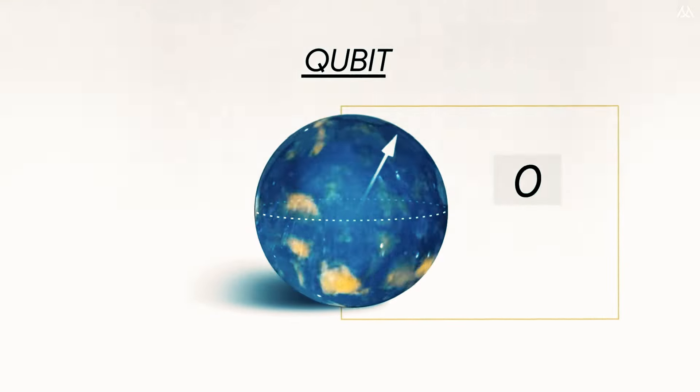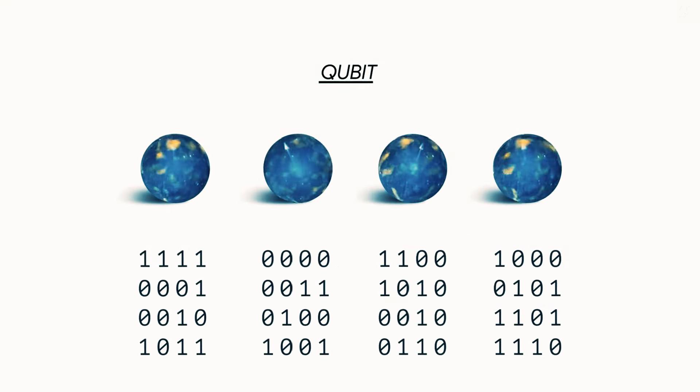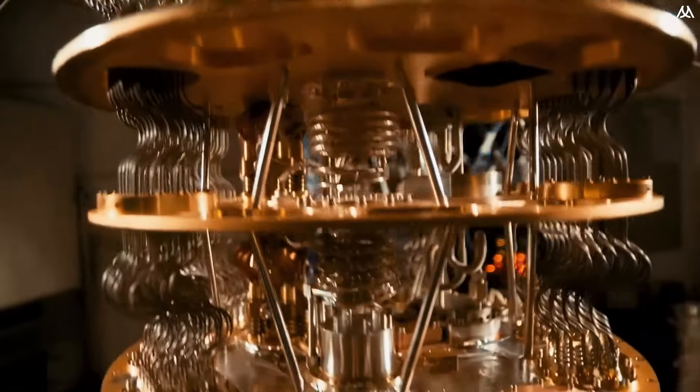Now, picture 100 qubits, each representing multiple states simultaneously. The number of possibilities grows exponentially, not linearly like in classical computing. This demonstrates the remarkable power of quantum computing.